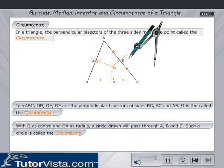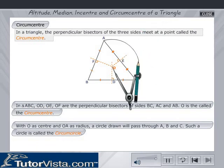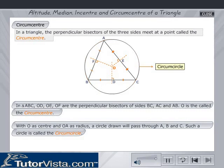With O as center and taking OA as the radius on a compass, draw a circle. Notice that the circle passes through all the vertices. Such a circle is called the circumcircle.